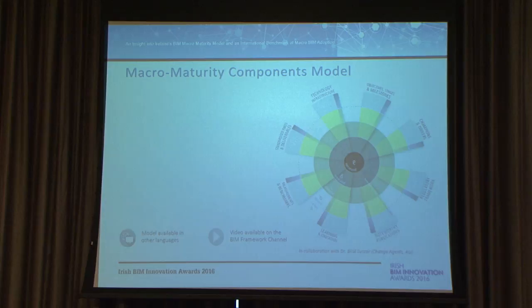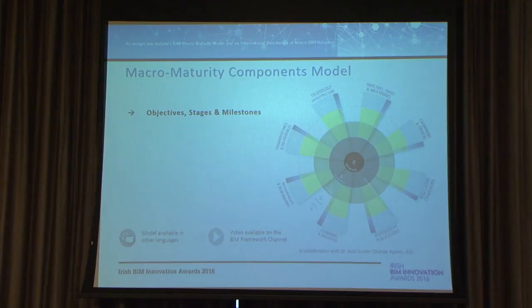The first model is the macromaturity component model. Basically, this model says that any market should achieve maturity across eight topics. These eight topics are: first, objectives, stages, and milestones — referring to the availability of market-wide BIM objectives, like the UK's Level 2 and Level 3.